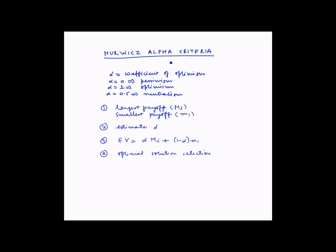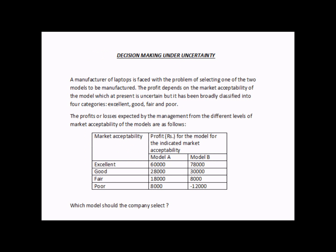Let us look at an example to understand this in detail. A manufacturer of laptops is faced with the problem of selecting one of two models to be manufactured. The profit depends on the market acceptability of the model, which at present is uncertain but has been broadly classified into four categories: excellent, good, fair, and poor. The profits or losses expected from the different levels of market acceptability are given in a tabular format.